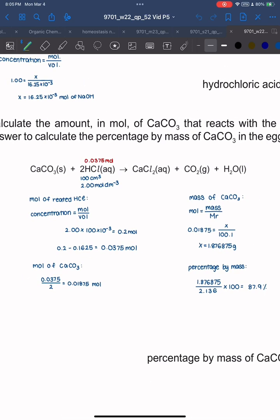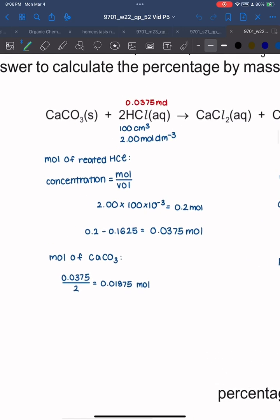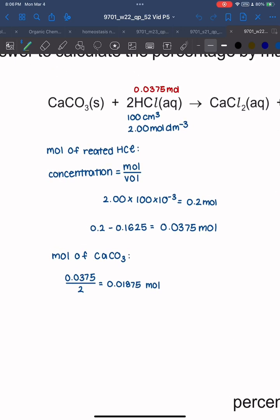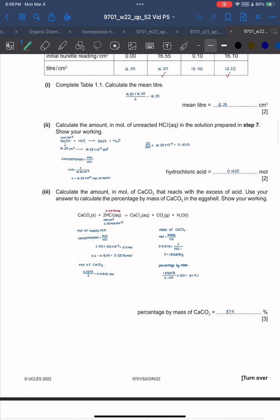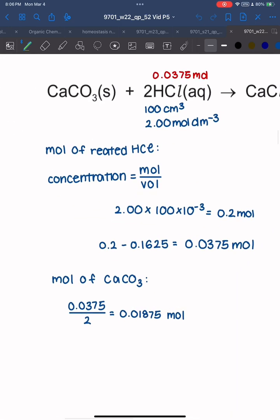We know that for HCl they use 100 cm³ of 2.00 mol/dm³ HCl. To find moles of reacted HCl, first use concentration equals mole over volume. Multiply concentration with volume. Don't forget to convert cm³ into dm³. You'll get 0.2 moles. That is the total HCl moles. Subtract the unreacted HCl: 0.2 minus 0.1625 to get 0.0375 moles of reacted HCl.